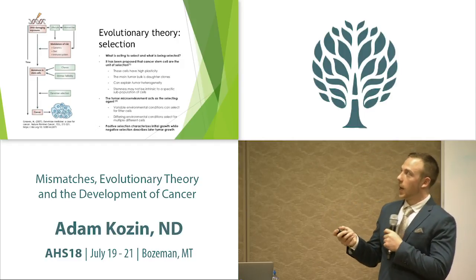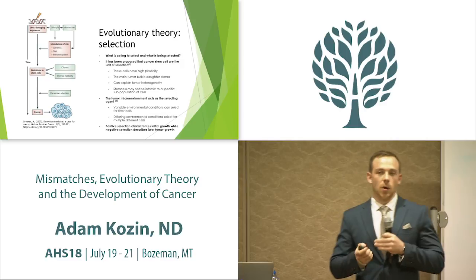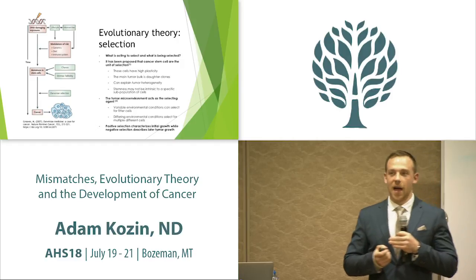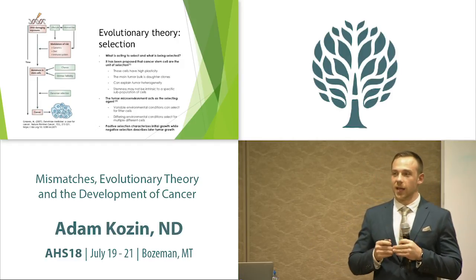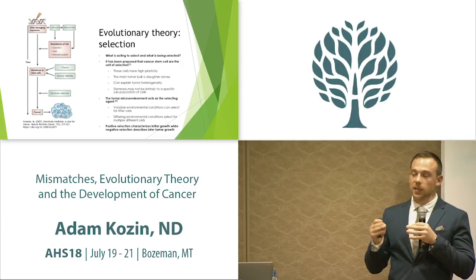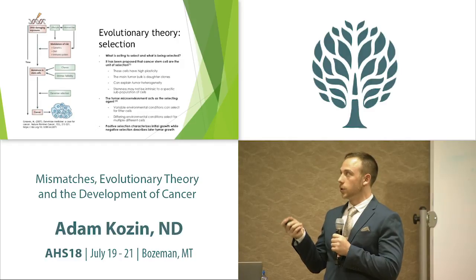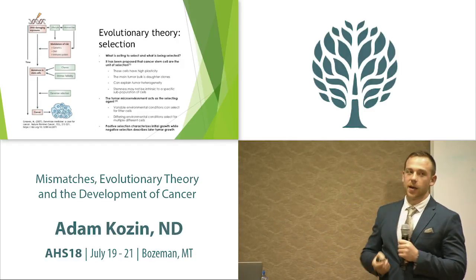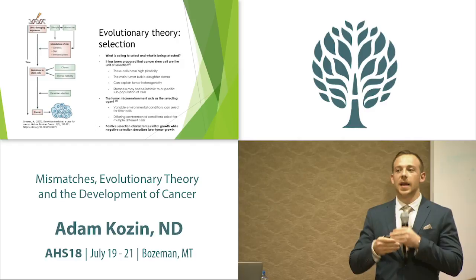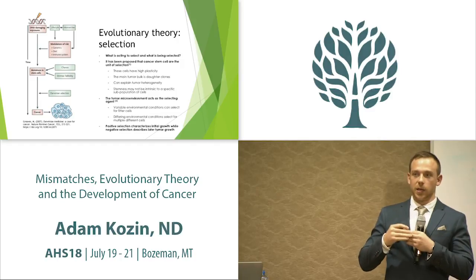This diagram sums it up: we have cancer stem cells with some intrinsic mutability and chance contributing to genetic mutations. Then we have mismatches and lifestyle factors that cause DNA-damaging events and mutations in cancer stem cells. Darwinian selection takes place in the tumor microenvironment, selecting for the fittest cells, leading to a cancerous cell and then tumor proliferation. Time is a very important factor — mutations must accumulate over time to form cancer, which is why we see cancer predominantly in the elderly.